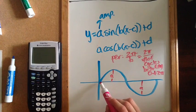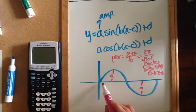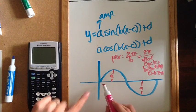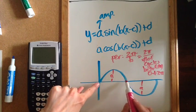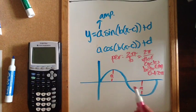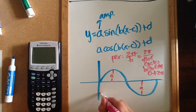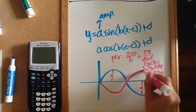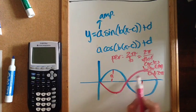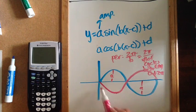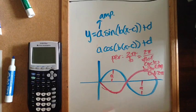A cycle is how long it takes to do one thing before it starts to repeat itself. For sine, one cycle goes: middle, top, middle, bottom, middle. If I had negative sine, I'd go: middle, bottom, middle, top, middle. So that would be one cycle for negative sine.